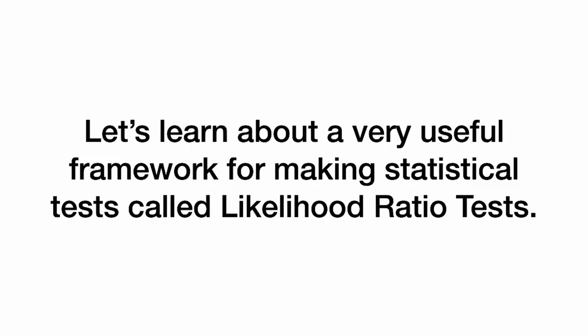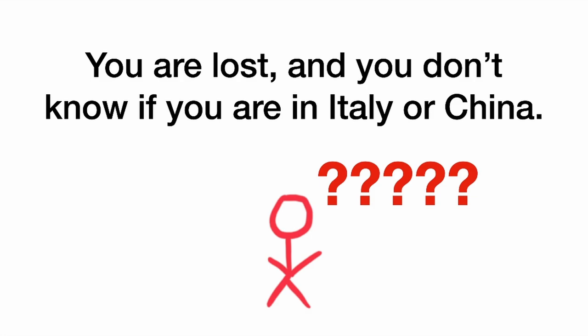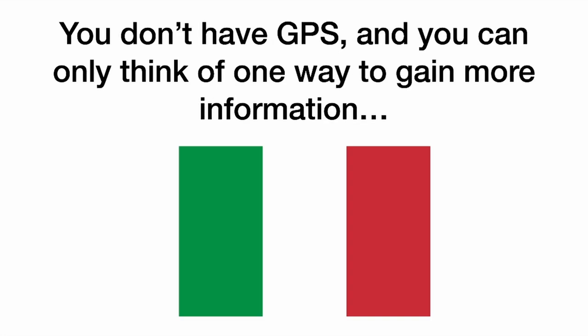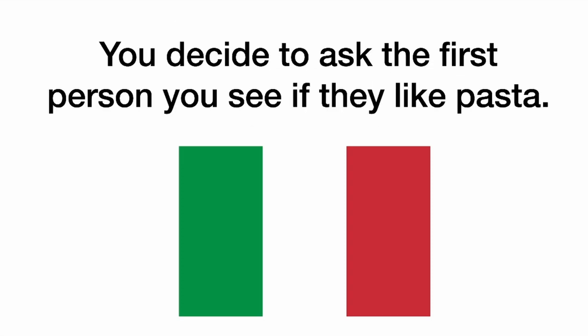Let's learn about a very useful framework for making statistical tests called likelihood ratio tests. You are lost, and you don't know if you are in Italy or China. You are pretty sure you're in Italy, so you're going to believe that until you find evidence otherwise. You don't have GPS, and you can only think of one way to gain more information. You decide to ask the first person you see if they like pasta.